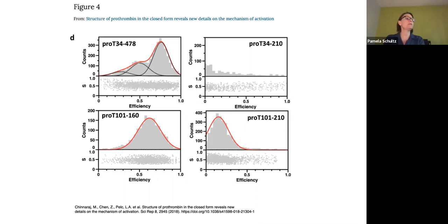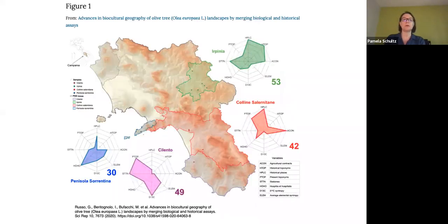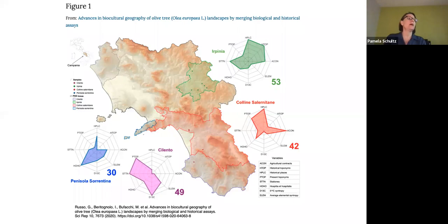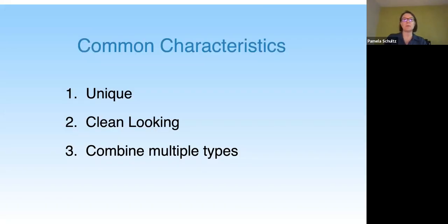These graphs also contain a points distribution, which is interesting — combining the histogram as well as individual points. The last example was very recently published in May 2020 and uses a combination of a map and what we refer to as spider graphs, with a template available within DataGraph. Finding these three examples was very inspiring because they really highlight what it means to be a graph in a scientific publication: very unique, very clean, and containing multiple types of graphs.